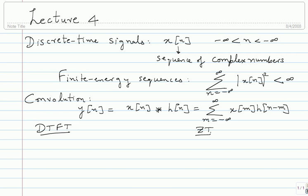The DTFT, the discrete time Fourier transform, is denoted x of e power j omega. Why am I writing e power j omega instead of just x of omega? Just by writing x of e power j omega, it implies that everything should be in terms of e power j omega. For instance, e power j omega is periodic in omega with period 2 pi. So whatever I do to this function, it will also be periodic with period 2 pi.